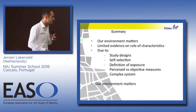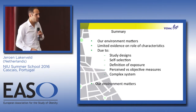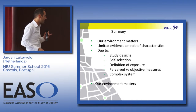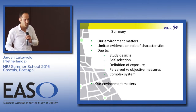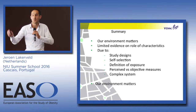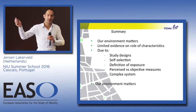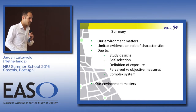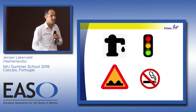To summarize: our environment matters. There is limited evidence on the role of specific characteristics, due to study designs, self-selection, the definition of exposure, the perceived versus objective measures distinction, and because it's a complex system. It's unlikely we will find one single aspect of our environment that solves the obesity problem — it's not about street lighting alone. It's a complex system and we need to take that into account.